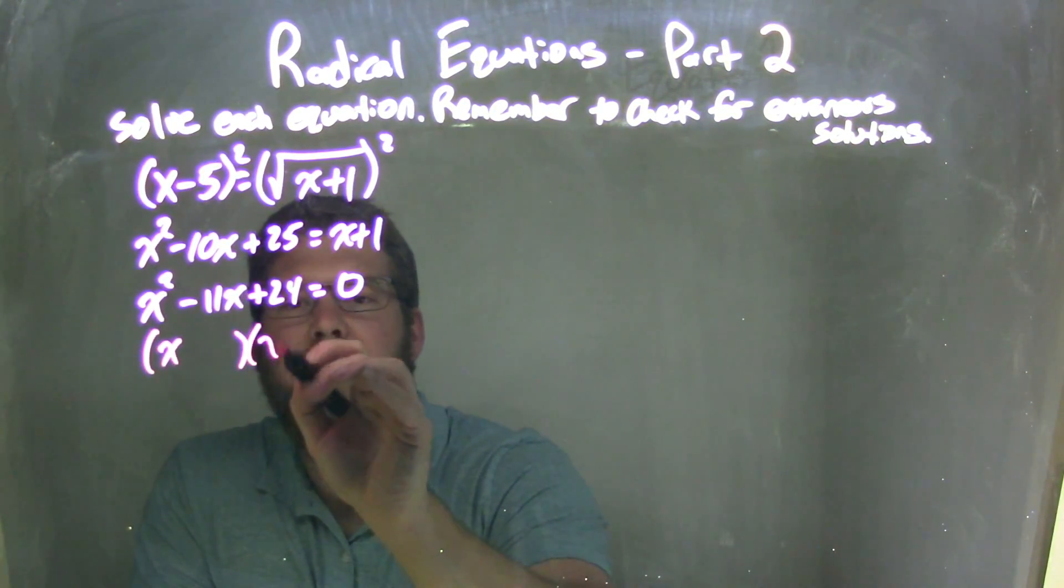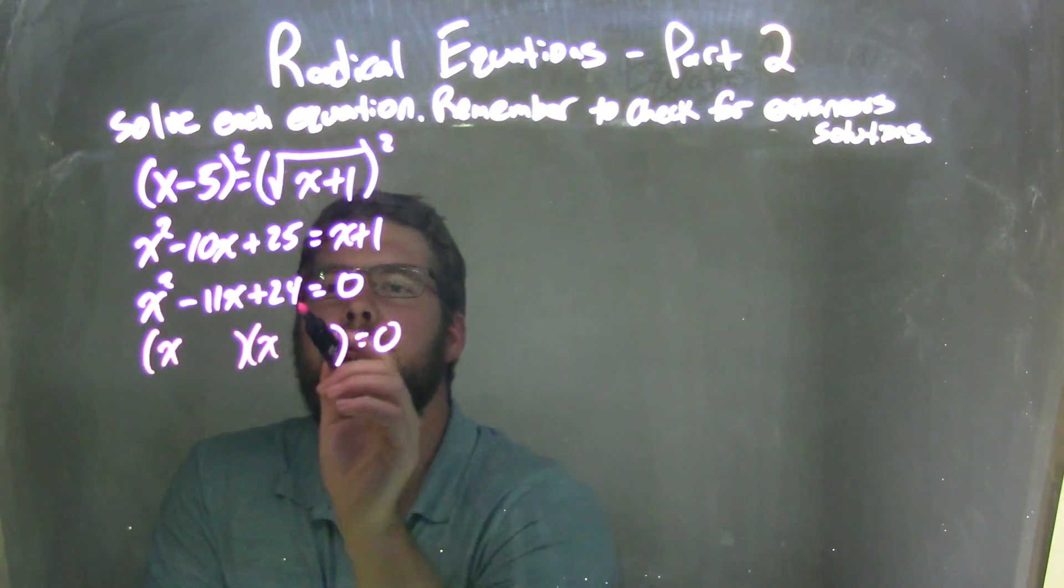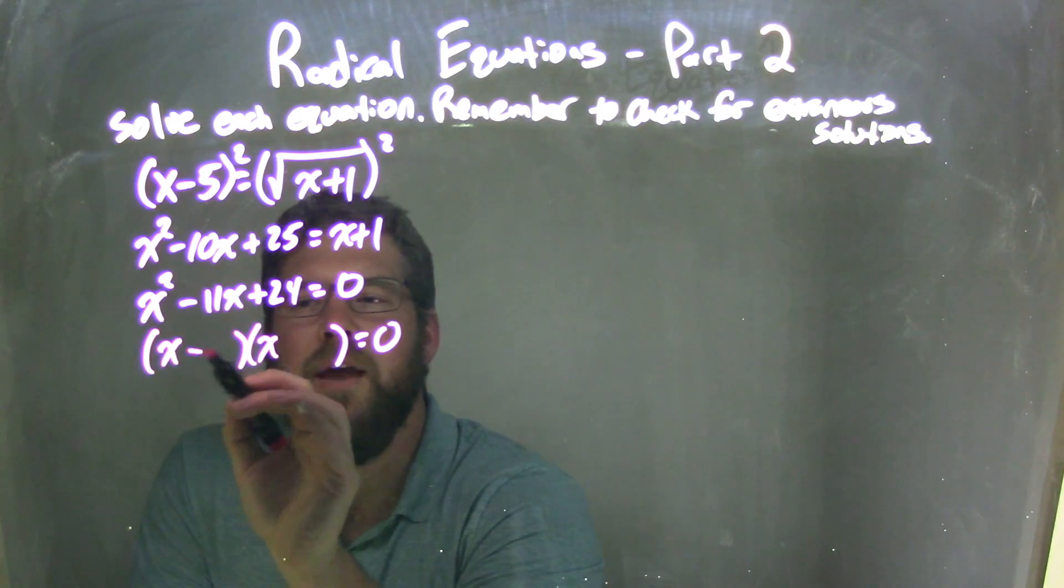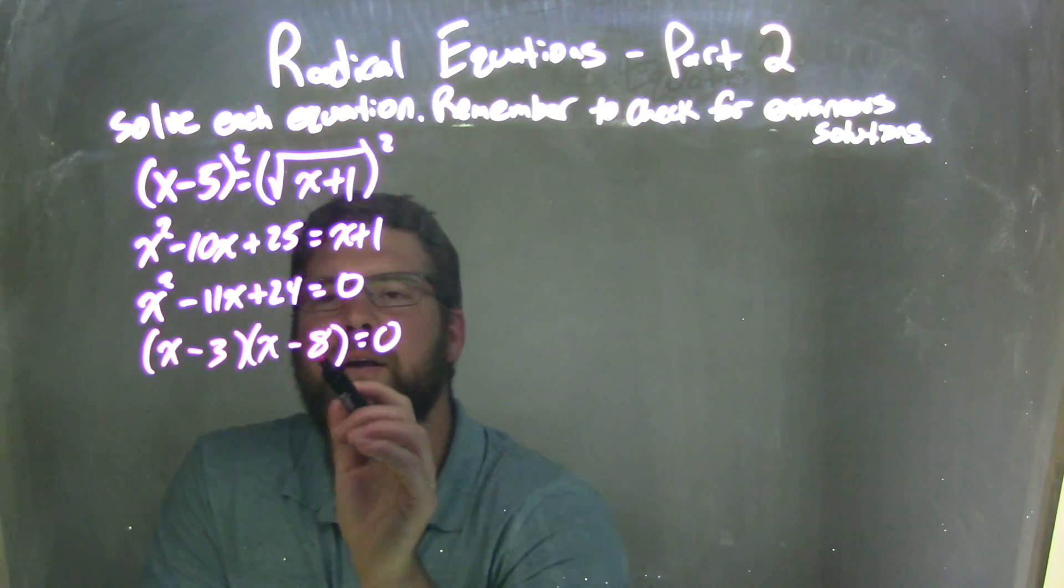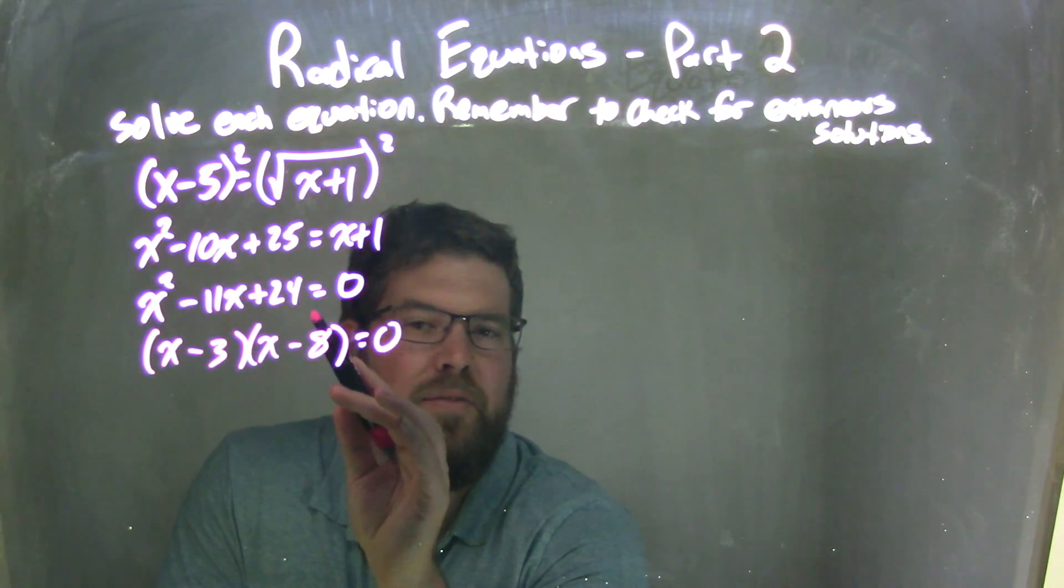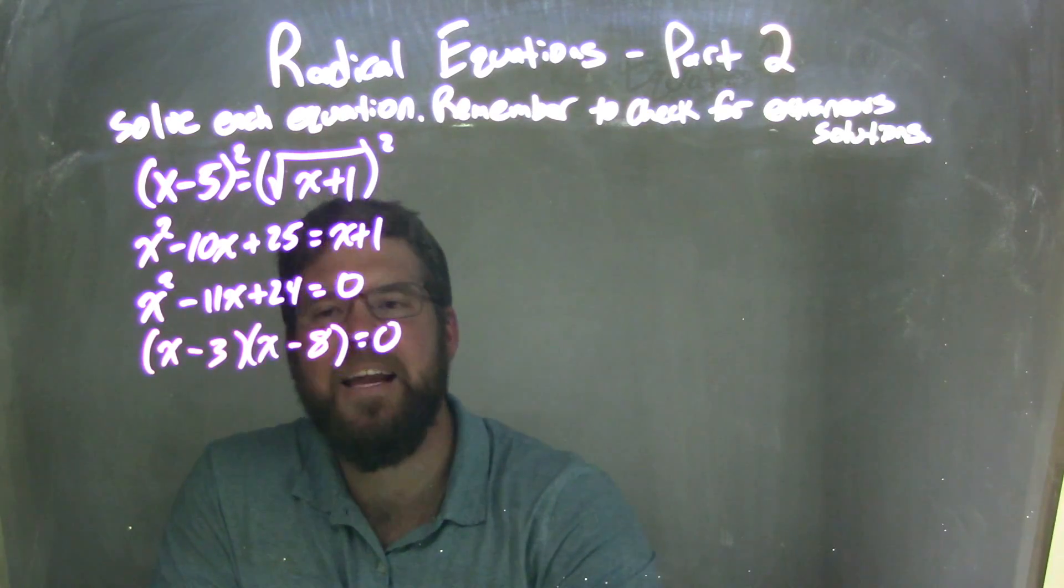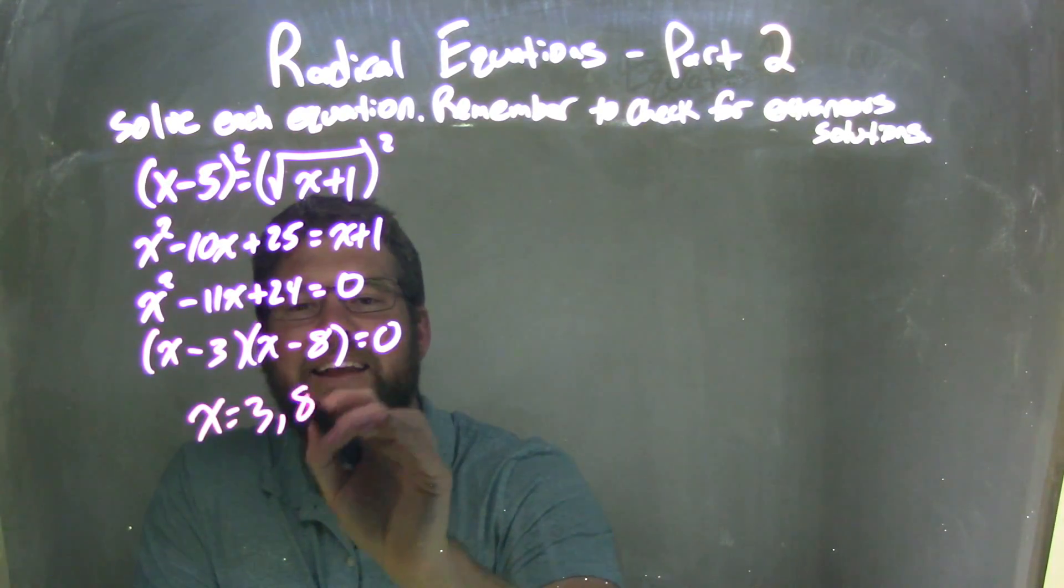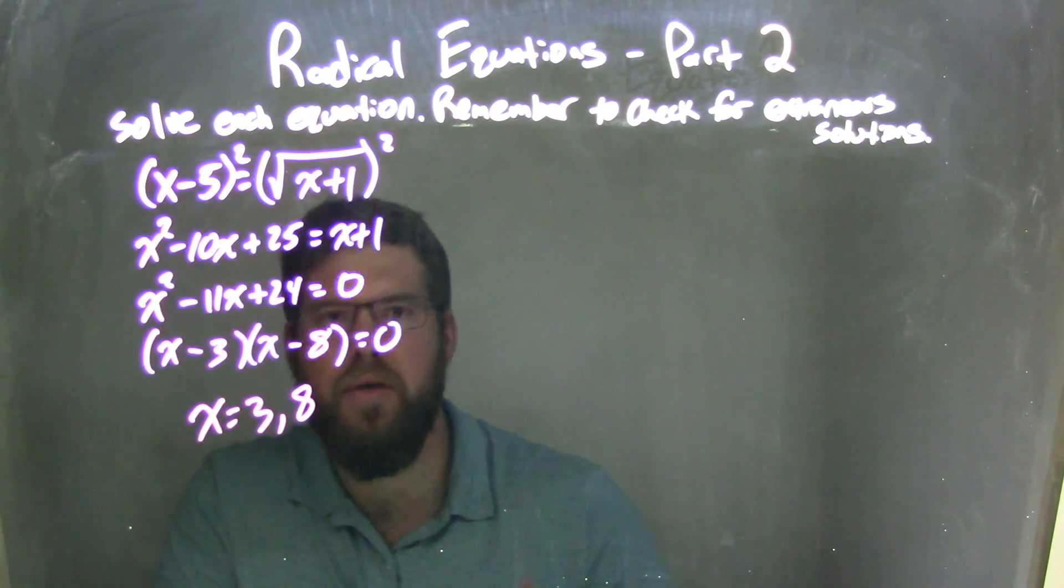So we have x squared minus 11x plus 24 equals 0. Positive 24, negative 11, I'm thinking minus 3 and minus 8. Negative 3 times negative 8 is a positive 24. They add together to be a negative 11. Fantastic. So our two solutions here are 3 and 8. So we need to check both of them here.